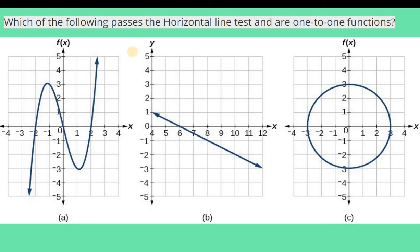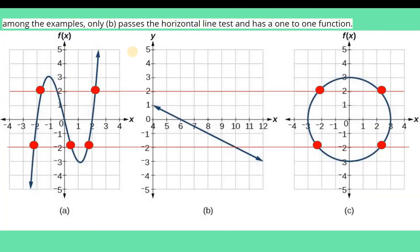In the same manner, we can use it in our example below. Let's try to apply the horizontal line test on this set of graphs. So we're just going to draw the horizontal line. So I drew it straight forward here. And if you would notice, among all the graphs, only graph B is the one that qualifies for a one-to-one function.